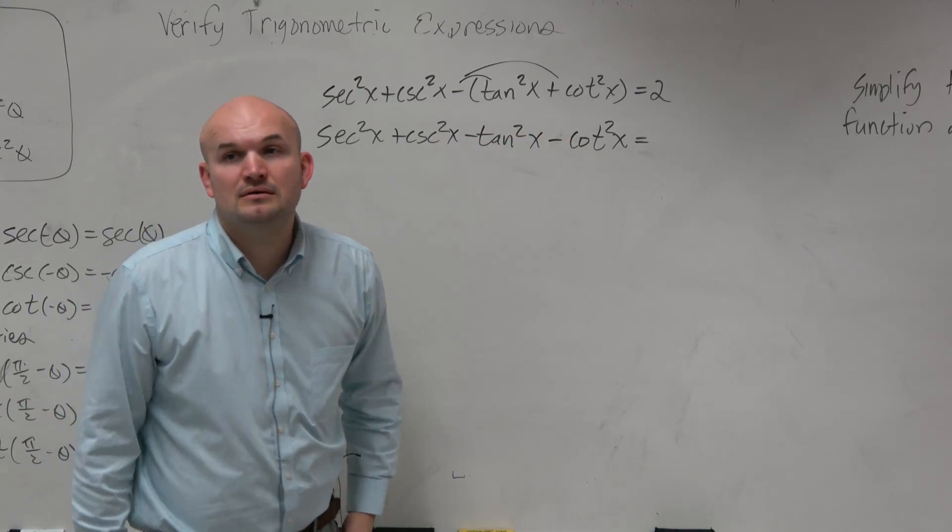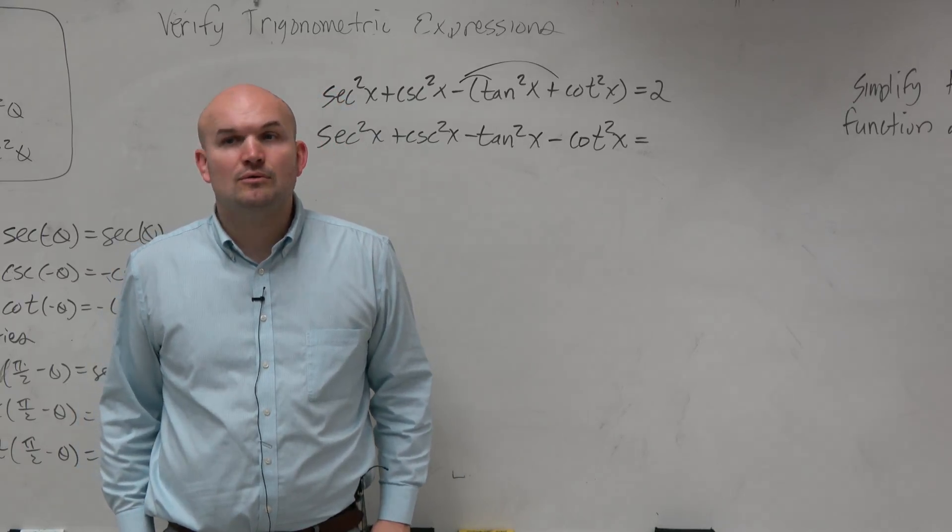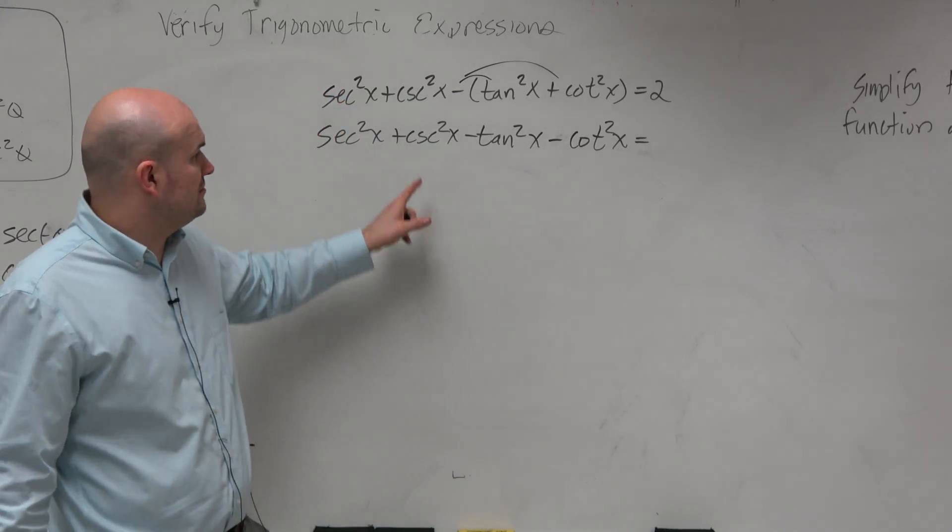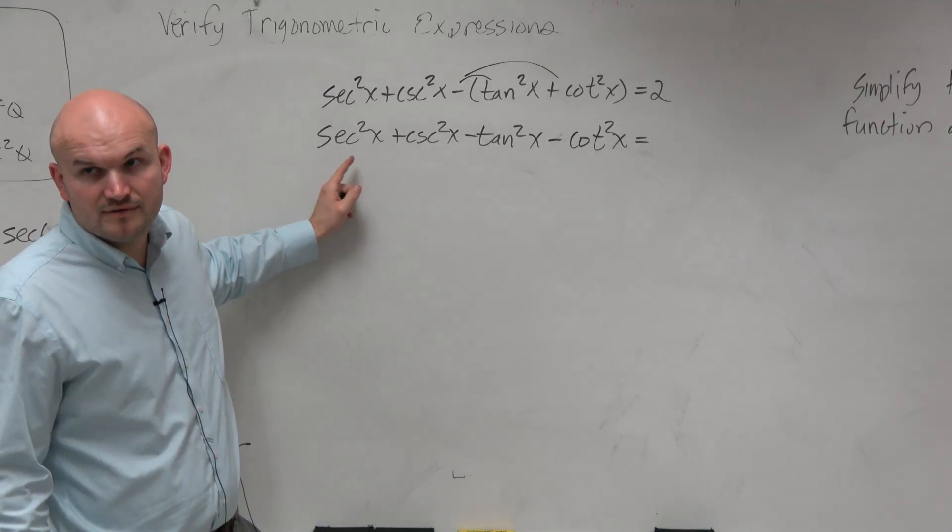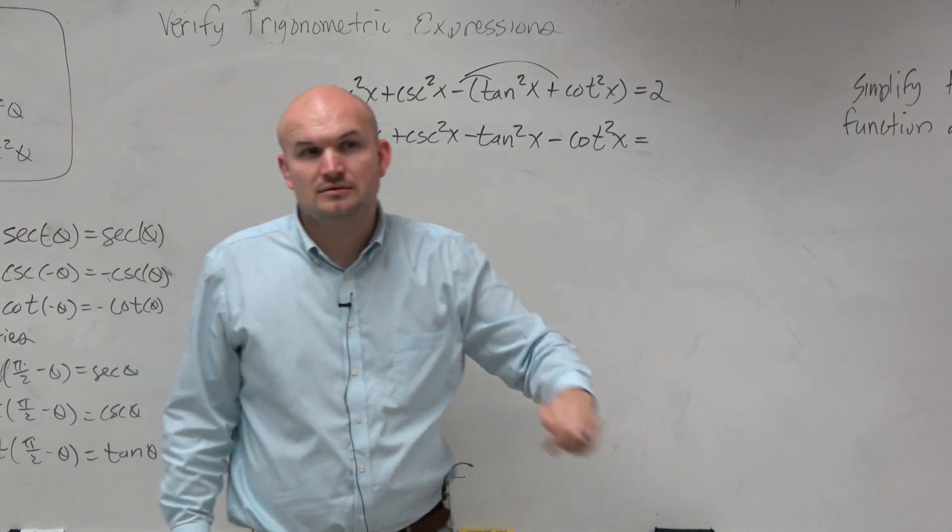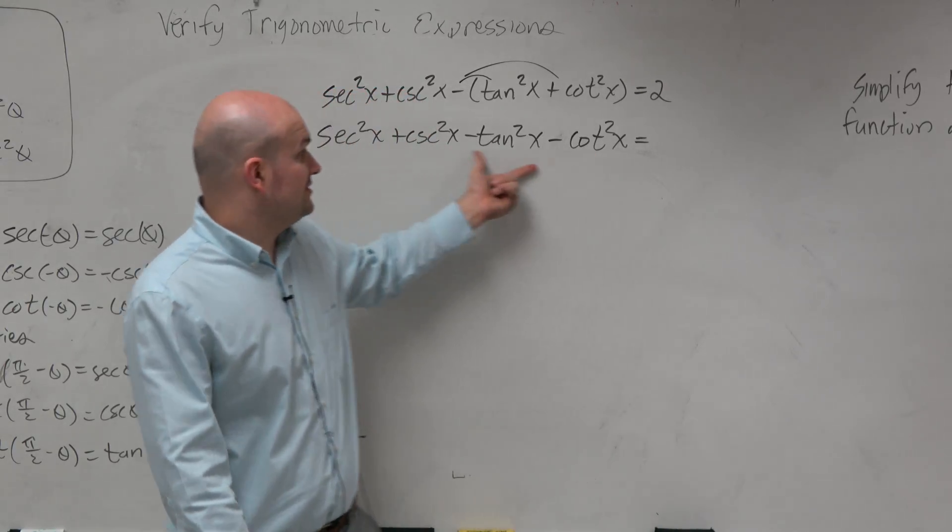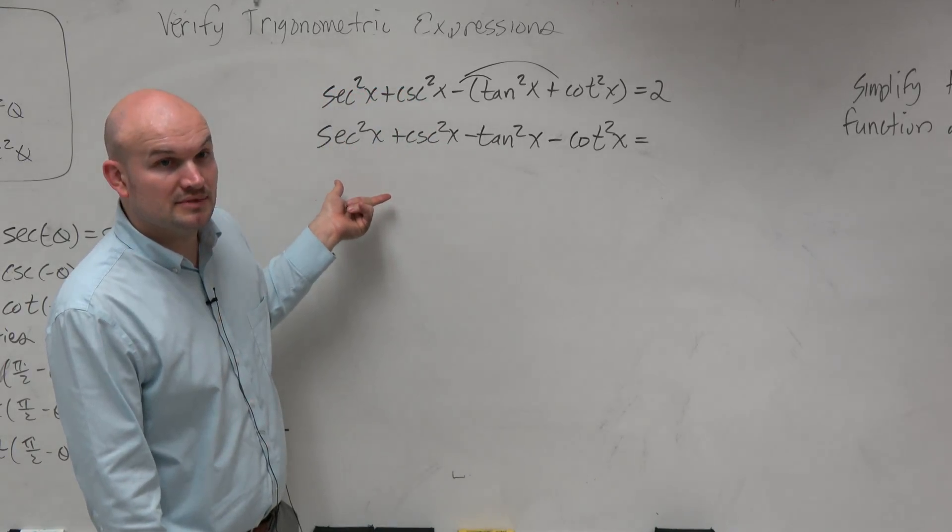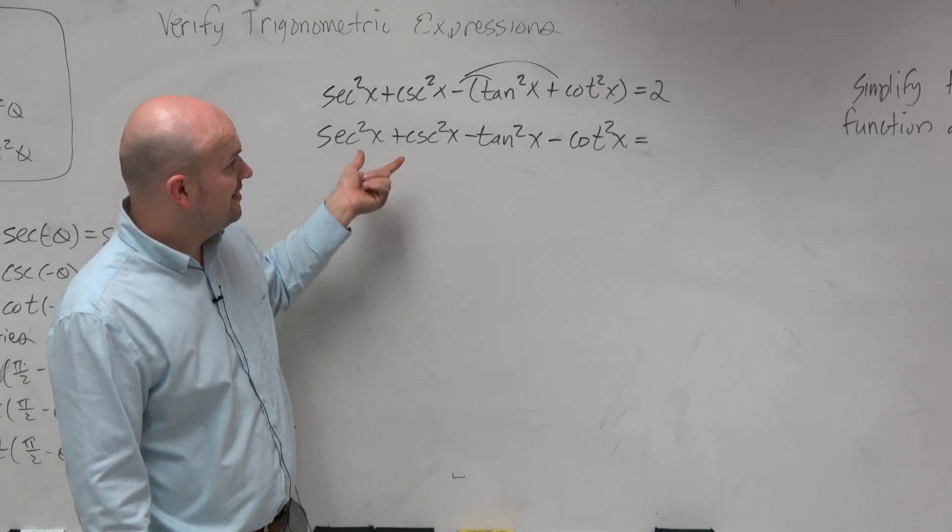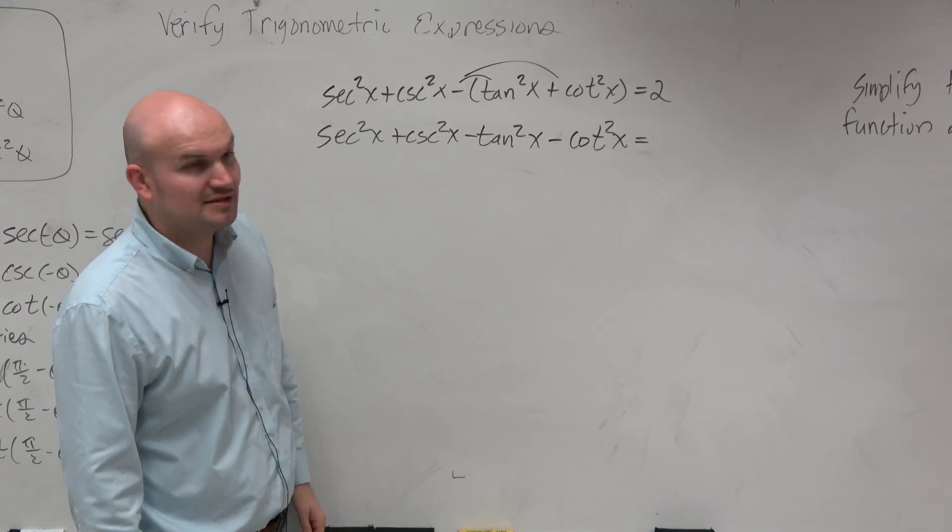So if you were trying to use the even and odd identity, what would you do to square root? Well, you wouldn't want to use the even and odd, because none of these are like negative. None of the angles are negative. Can you find the negative terms? So none of them are like terms. And none of them are like terms, and there's nothing we can combine.